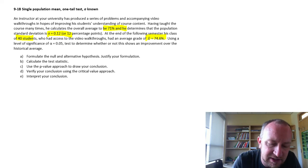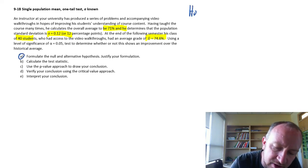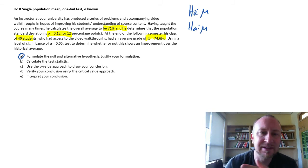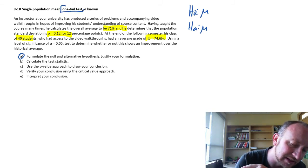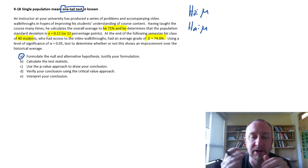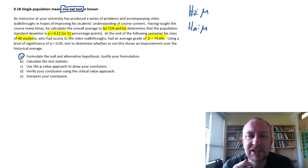The very first thing we need to do is formulate the null and alternative hypotheses. We're testing a population mean, so this is the letter mu. The problem tells us we're doing a one tail test so we can ignore the possibility of a two tail test.